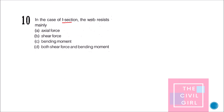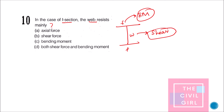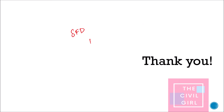Next question: in case of an I-section, the web resists what? The web takes care of shear force, while the flanges take care of bending moment. This is frequently asked in interviews and competitive exams — the answer is the web resists mainly shear force. With this we come to the end of this video. In the next video we will look at shear force and bending moment diagrams for almost all types of beams and loadings. Thank you for watching — see you in the next video, bye!